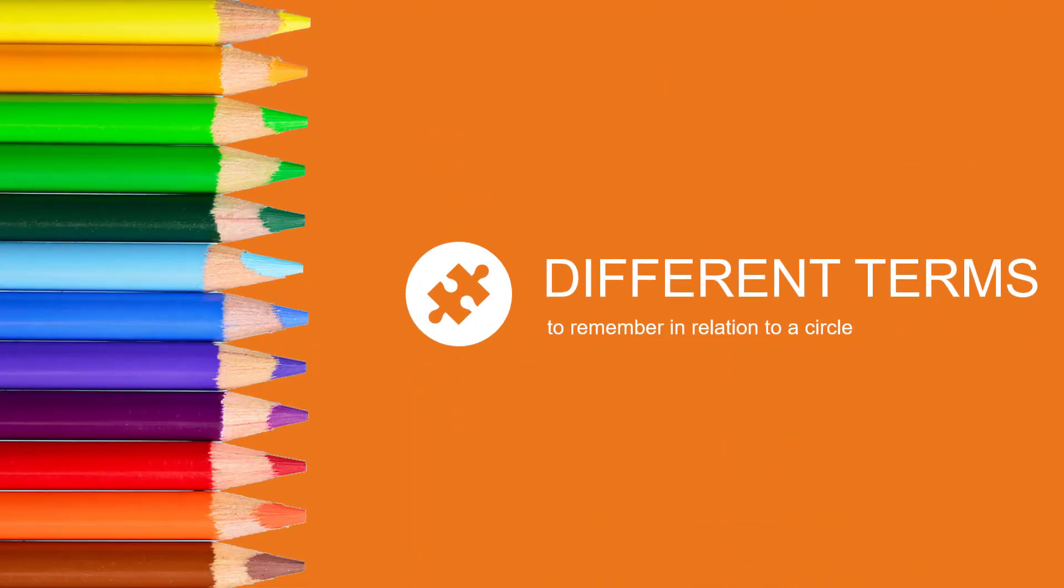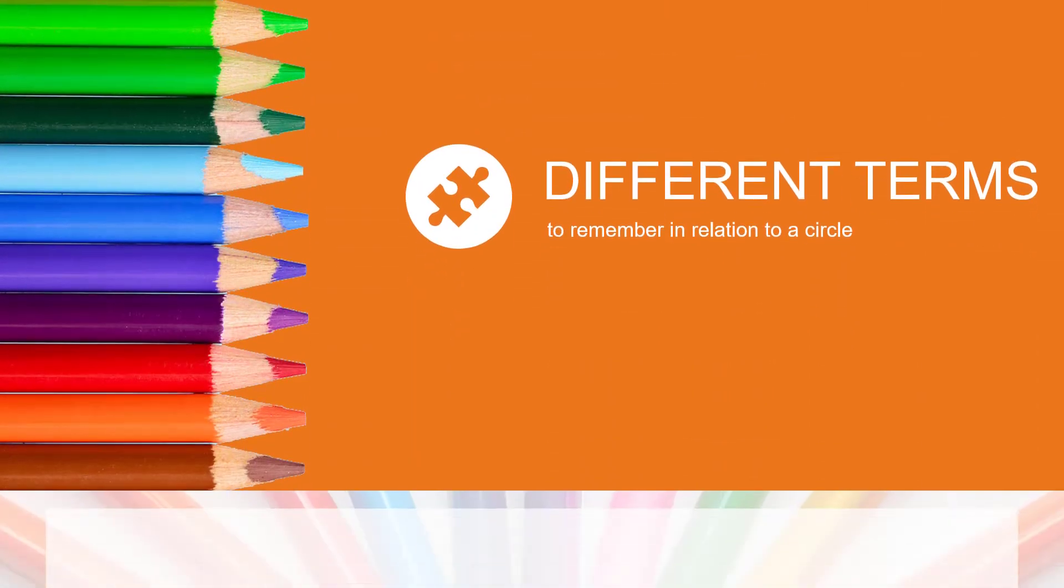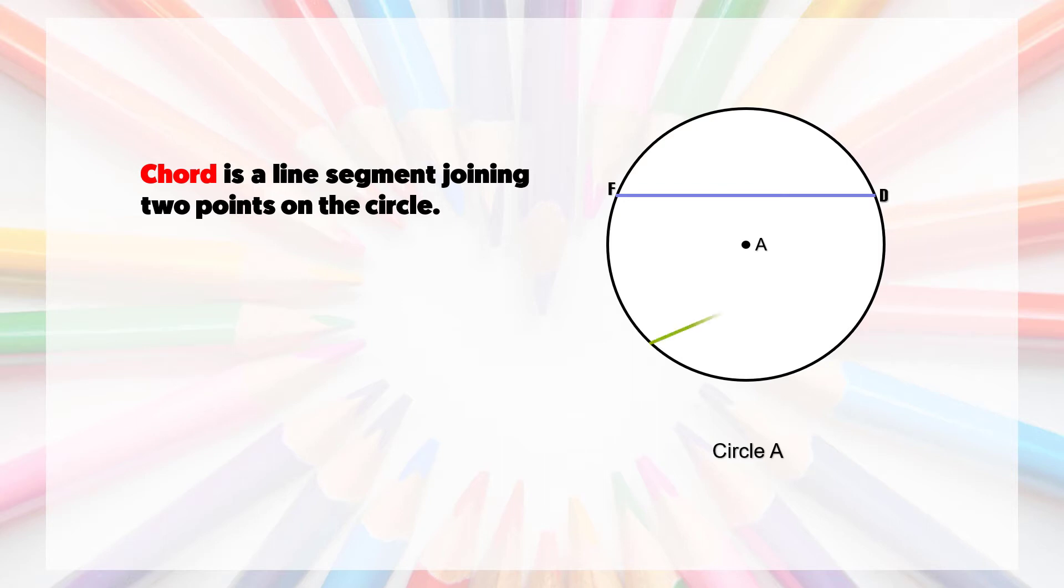Different terms to remember in relation to a circle. Number one, chord: It is a line segment joining two points on the circle. In the circle shown, line segment FD and line segment HC are chords.